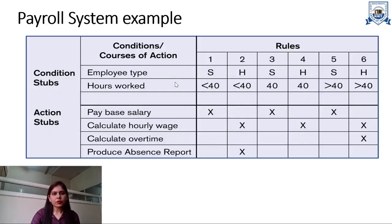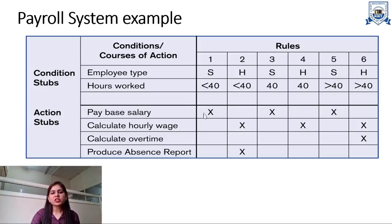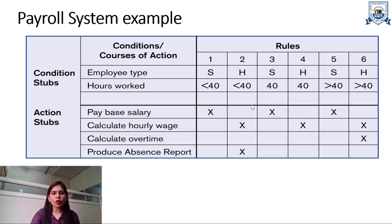This is an example of the decision table of a payroll system. This is the condition stub, this is the action stub, and these are the certain rules which, when satisfied, an action is performed, specified by the cross symbol. For example, if an employee worked less than 40 hours, then pay based on salary — that action will be performed.